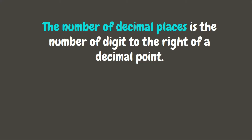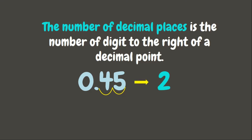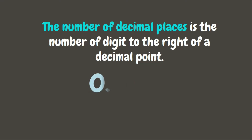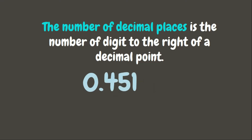The number of decimal places is the number of digits to the right of a decimal point. Let's look at this example: 0.35. Let us count the decimal places — one, two — therefore 0.35 has two decimal places. Next, 0.5 — counting the digits to the right of the decimal point, we have one — therefore 0.5 has one decimal place. Last example: 0.451 — counting the digits, one, two, three — therefore it has three decimal places.